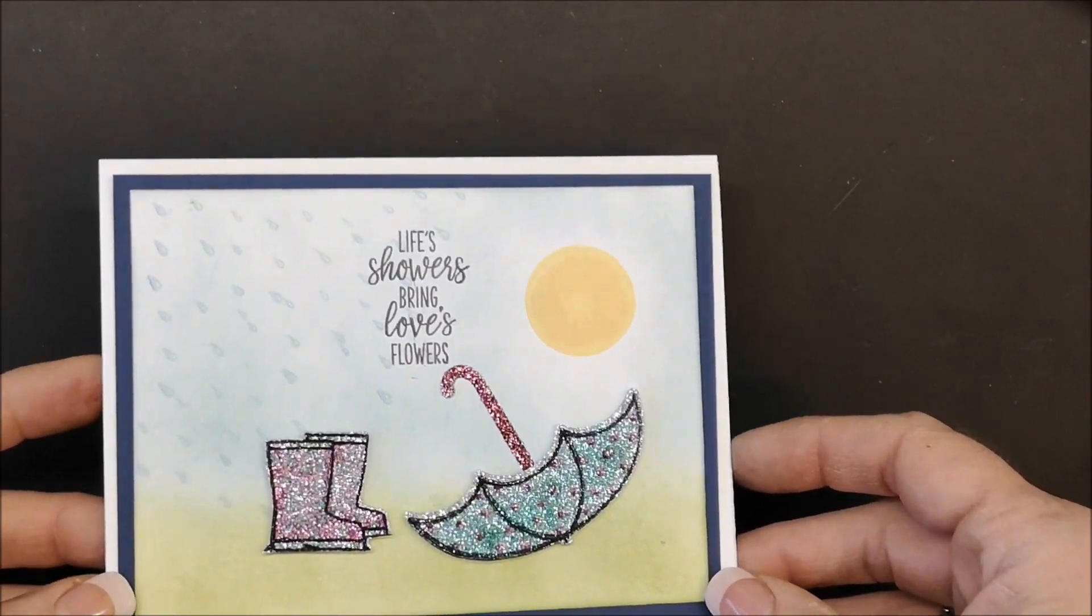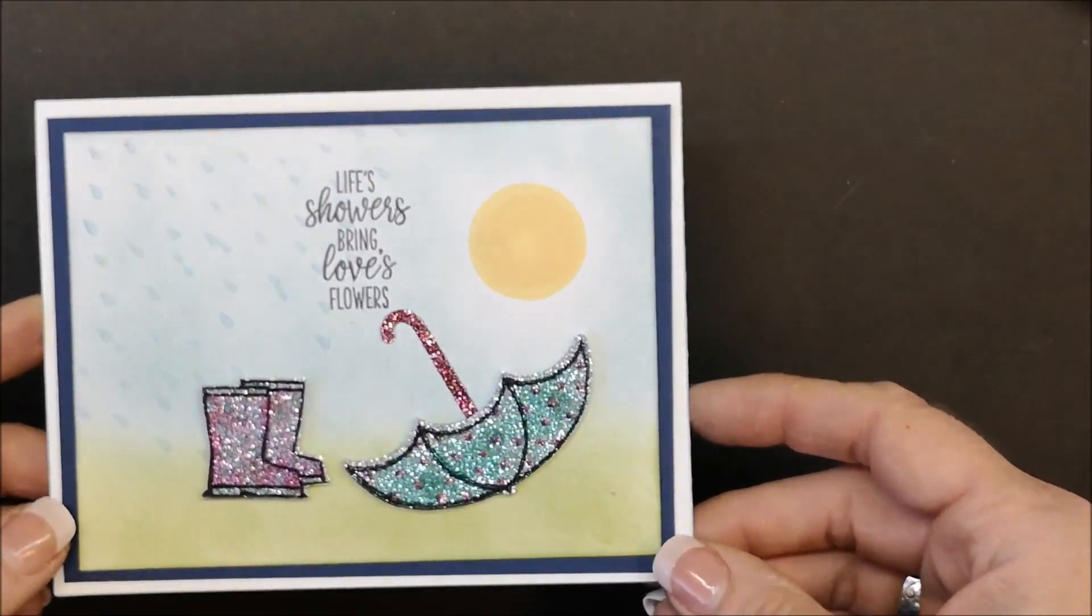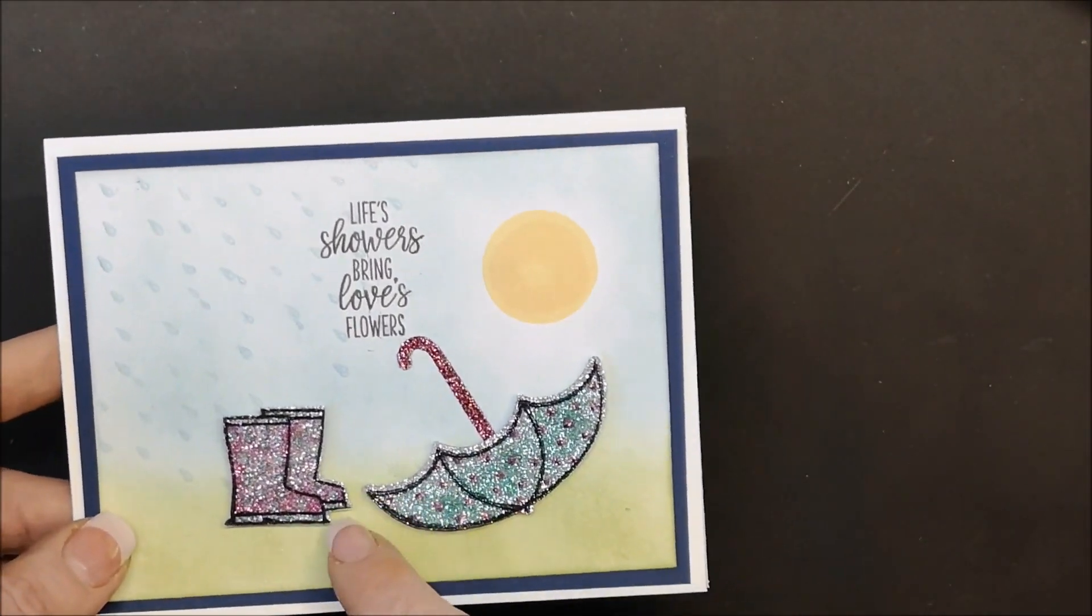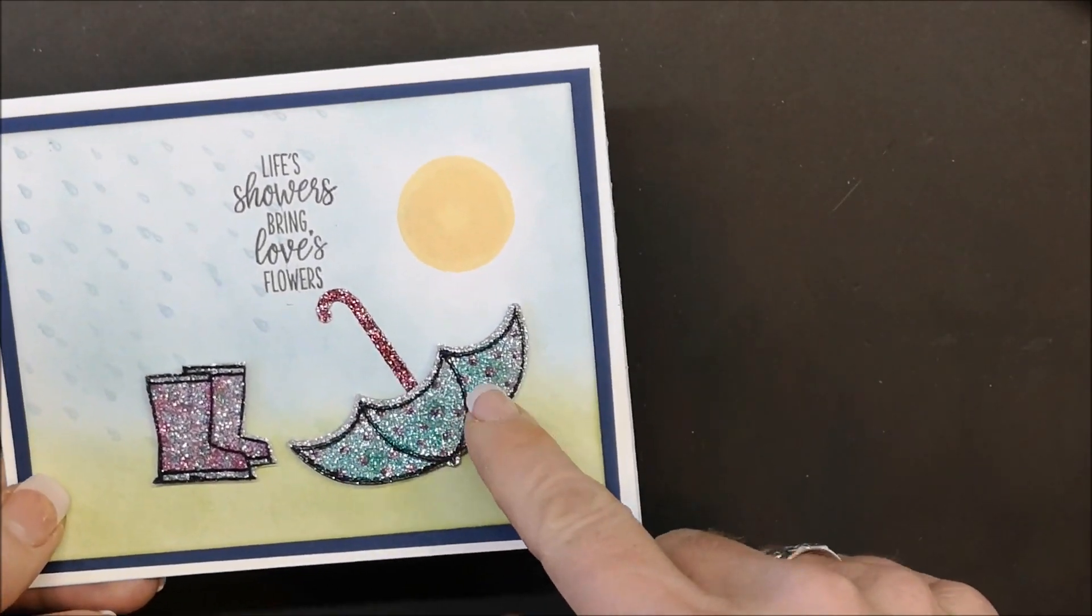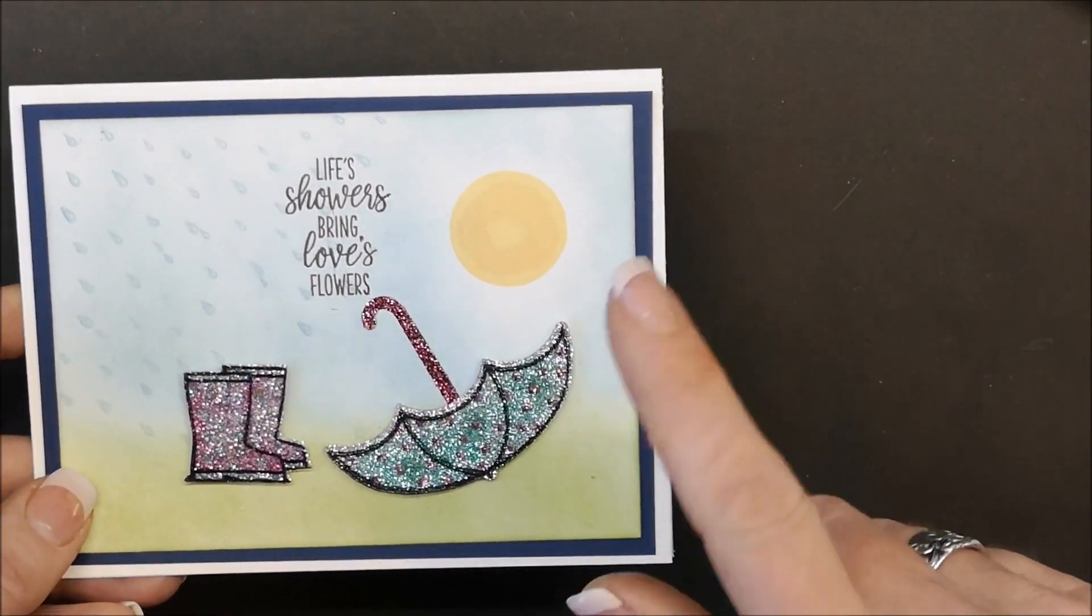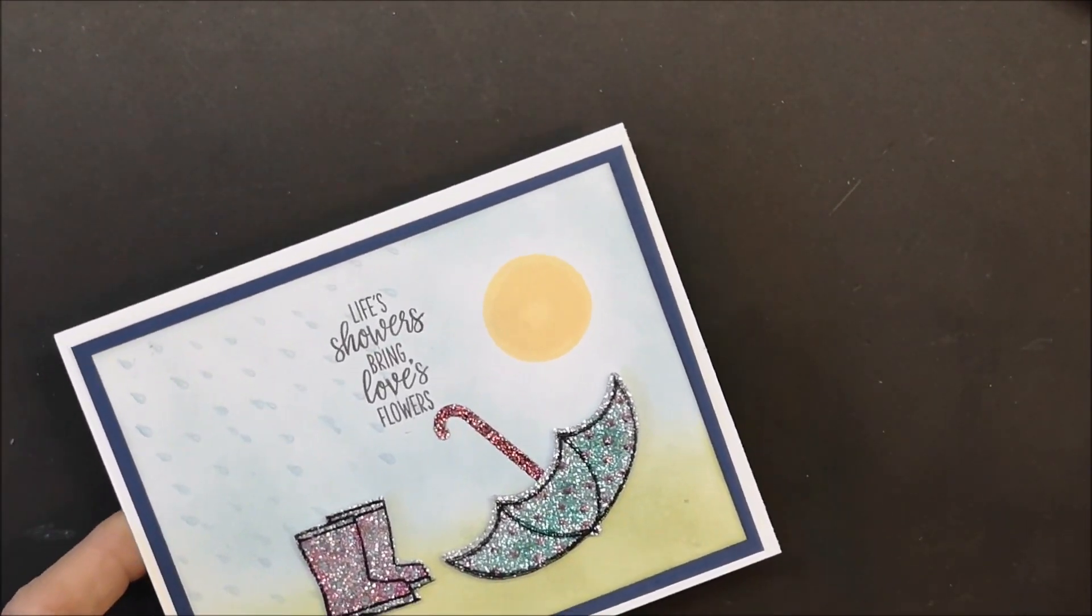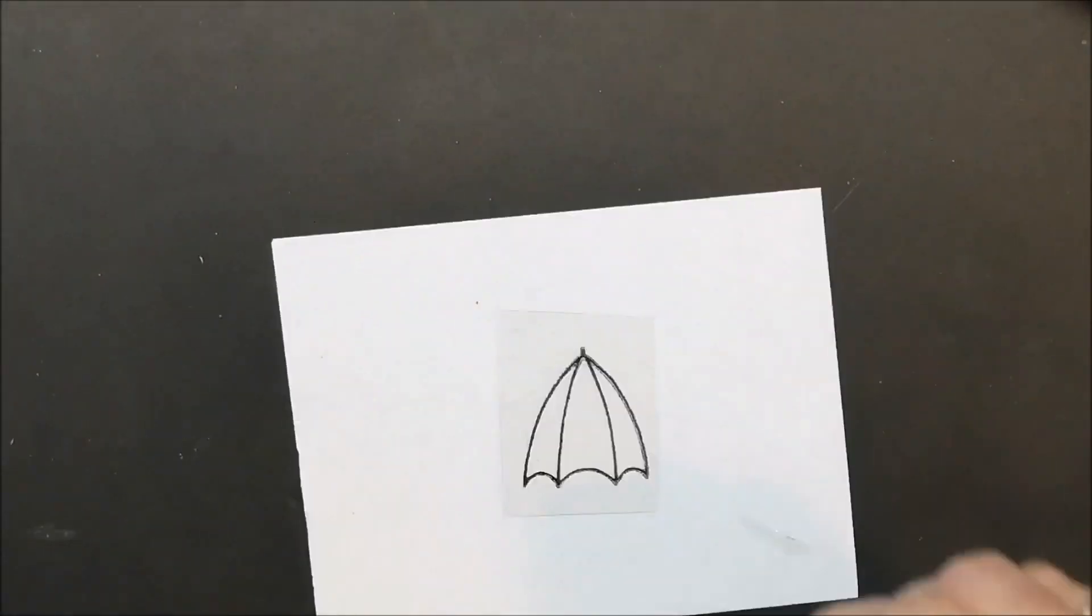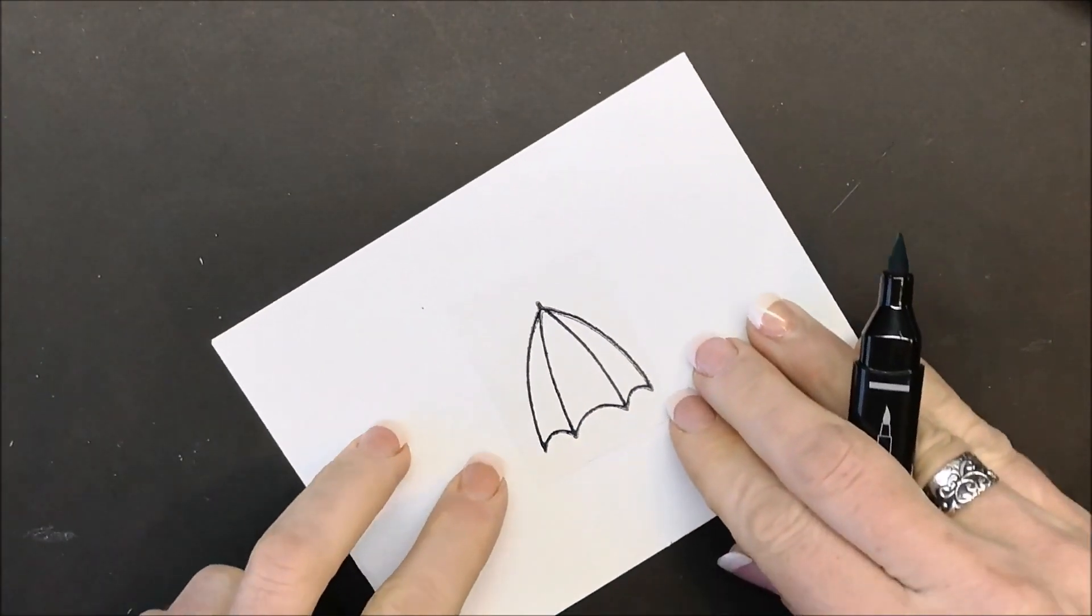How cool is that? What a fun technique, so easy. Of course you don't have to add polka dots if you don't want, you could just keep it solid, you could draw lines if you wanted to. That brings me to why I stamped that other umbrella. Let me show you another fun way you can use this technique. Again on the rough side I'm going to take my dark Bermuda Bay.